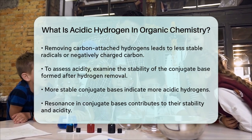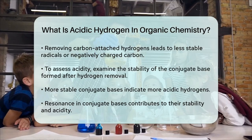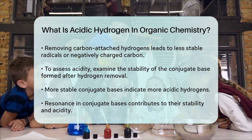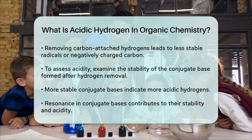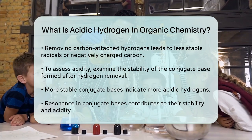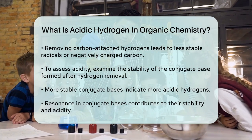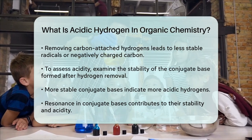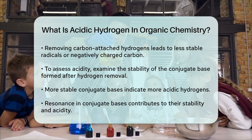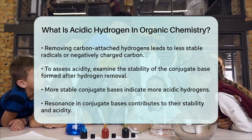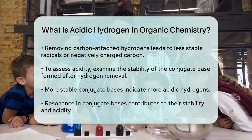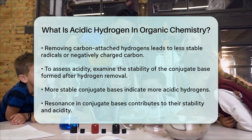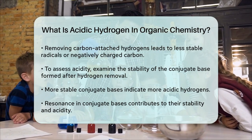In summary, acidic hydrogens are those that can be easily removed as protons due to their attachment to electronegative atoms and the stability of the resulting conjugate base. This concept is crucial in understanding the acidity of various organic compounds.